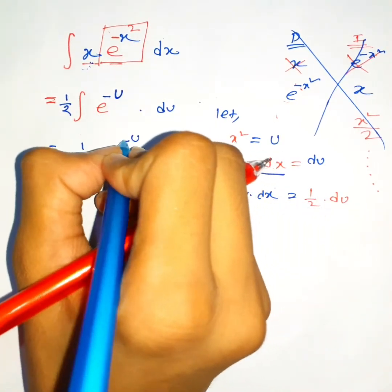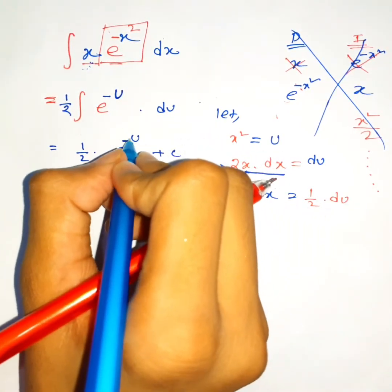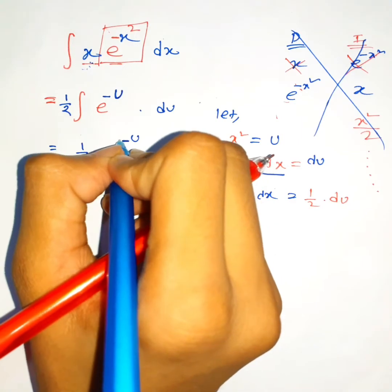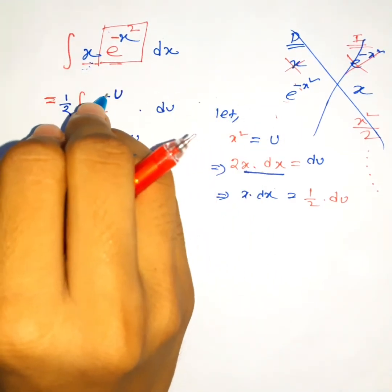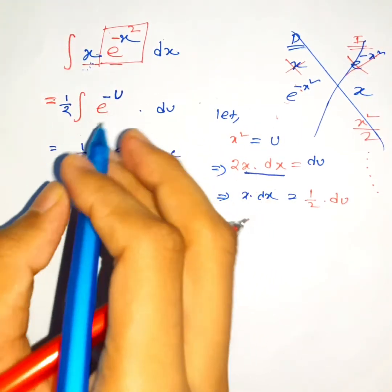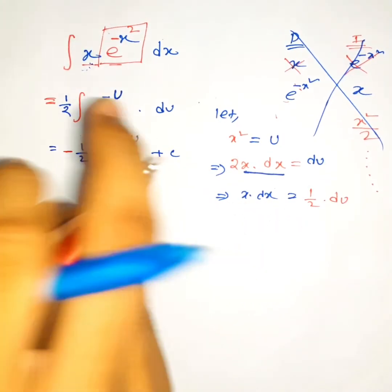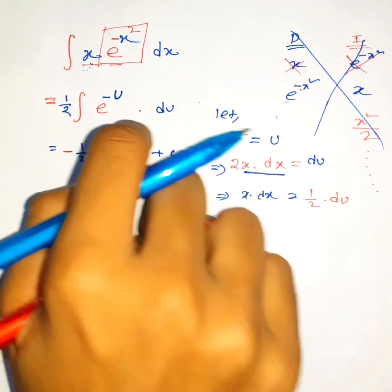But we need to divide it by negative one, right? Because we don't have a positive sign here, so we need to divide the whole thing by negative. This is equal to negative half e to the negative u plus c.